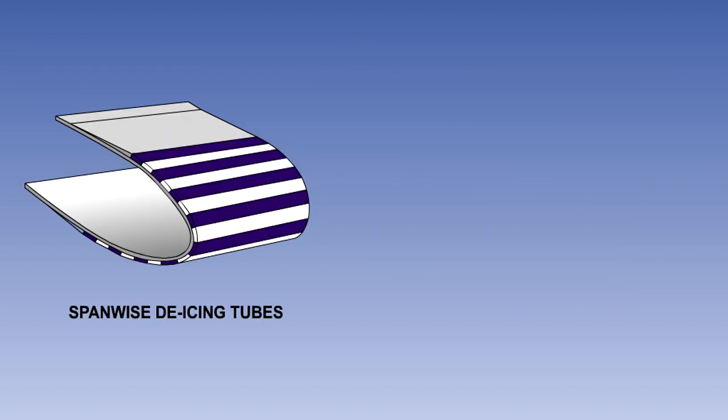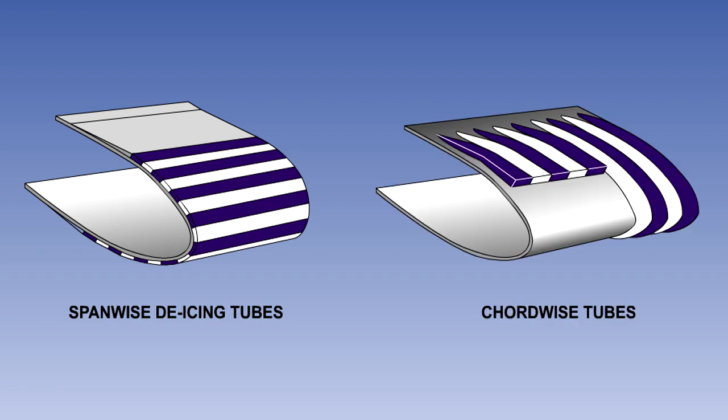In some boots, the tubes are so arranged that when the boots are in a position on a wing or tail leading edge, the tubes run along the leading edge. In others, they run across at 90 degrees to the leading edge.